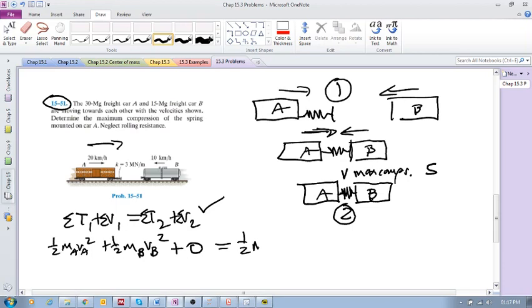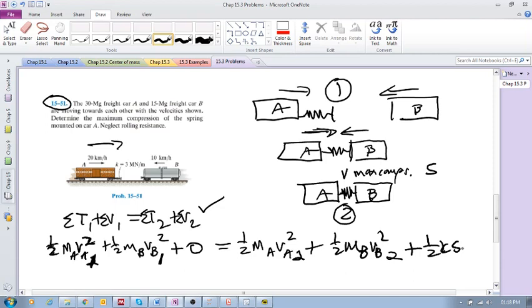If you write this out: it's ½m_A v_A² plus ½m_B v_B² at state one. What's the potential energy in the system? We're not looking at gravity, but there is a spring. At state one it is uncompressed, so the potential energy due to the spring will be zero. Then we'll have ½m_A v_A² at state two plus ½m_B v_B² at state two.